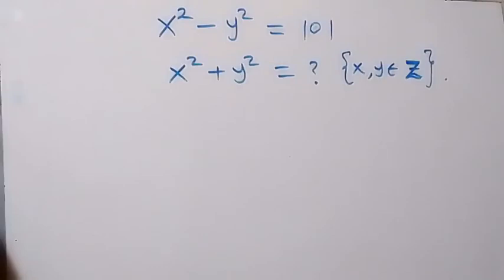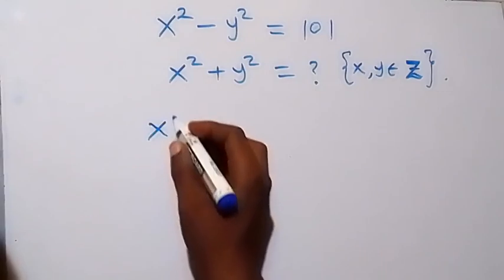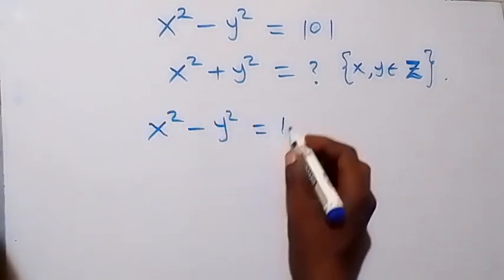Hello, you are welcome to solve this nice algebra problem. Given x² - y² = 101, you have to find x² + y². From what you are given, which is x² - y² = 101,